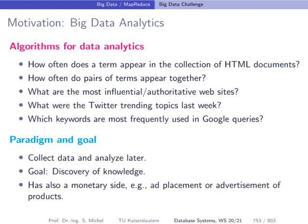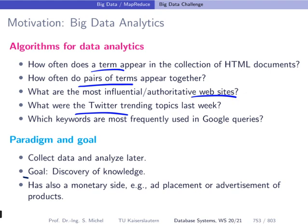Many algorithms are interesting to apply on big data. For instance, looking at a search engine with a huge corpus of HTML documents, you can compute the most frequently occurring terms, how often pairs of terms appear together, which websites are most influential, what topics are trending on Twitter, and which keywords users most frequently use. The paradigm here is to discover knowledge — you accumulate data and analyze it to find interesting insights.